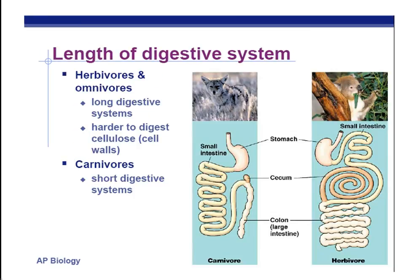Another thing you have to know: the length of digestive systems. Herbivores and omnivores have longer digestive systems as an adaptation for digesting harder-to-break-down cellulose. For example, the koala bear has one of the longest cecums in the animal world. The cecum in a lot of herbivores holds beneficial bacteria that will help break down cellulose. Remember, animals can't break down cellulose — they don't have an enzyme to break down the beta linkages — but there are microorganisms like bacteria that can do that. So the koala bear stores extra bacteria to help them break down that cellulose.